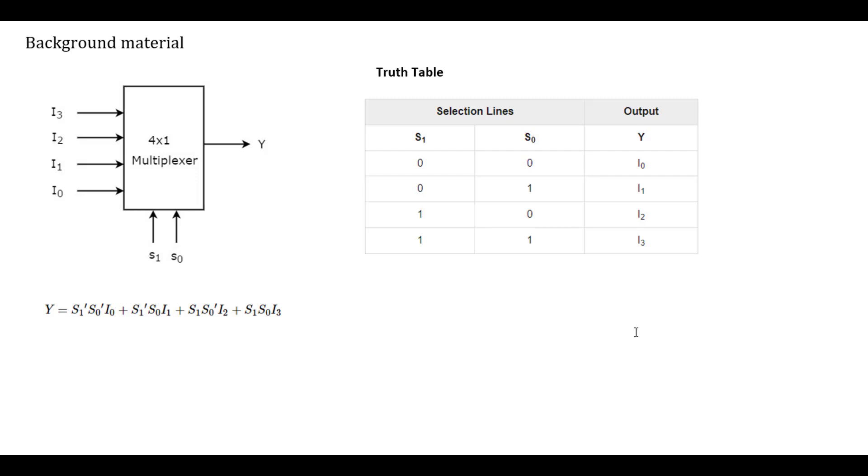If the selection input is 0, 1, it selects I1. If the selection inputs 1, 0, it selects I2. If the selection inputs are 1, 1, it selects I3.